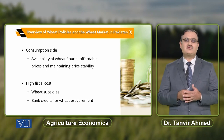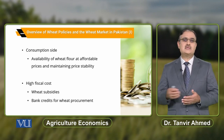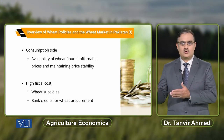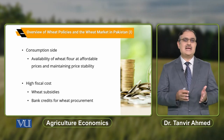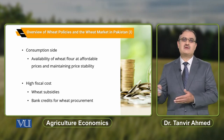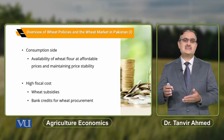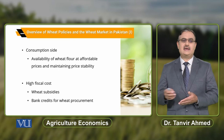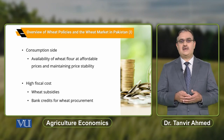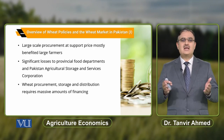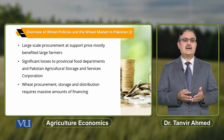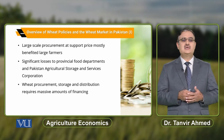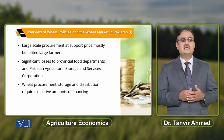The fiscal cost is to keep wheat prices in the market low, so the government provides subsidies. At the same time, to support farmers, the government announces a support price and procurement price for wheat, which requires bank credit for wheat procurement. However, when there is large-scale procurement, the major problem is that the benefit mostly goes to large farmers.